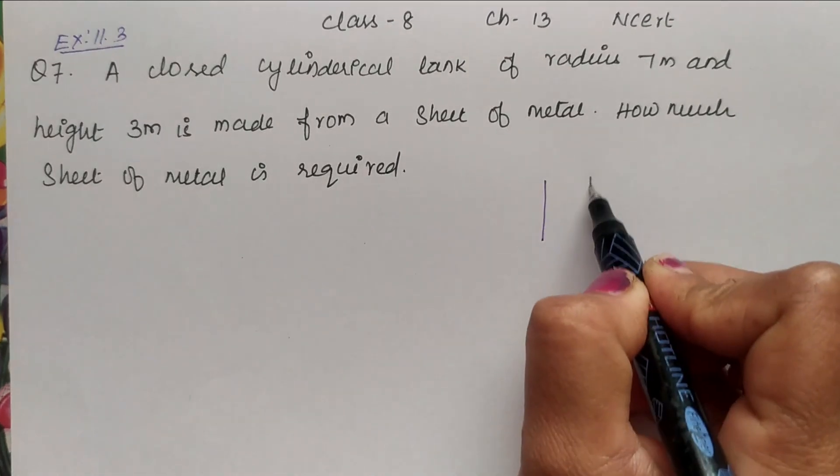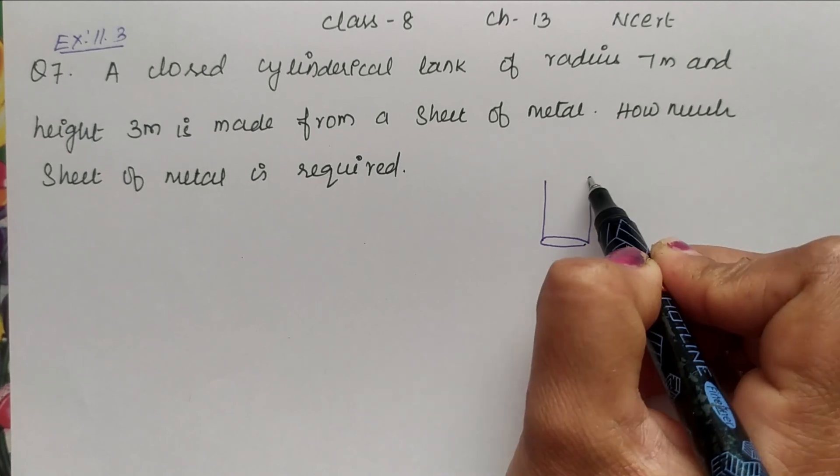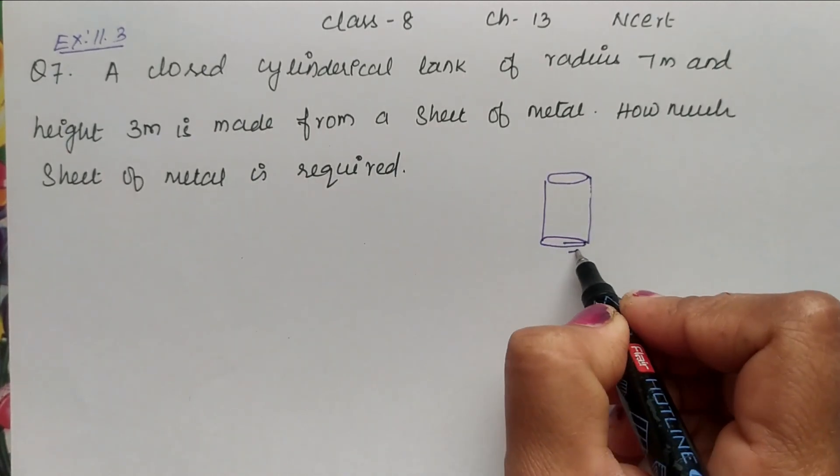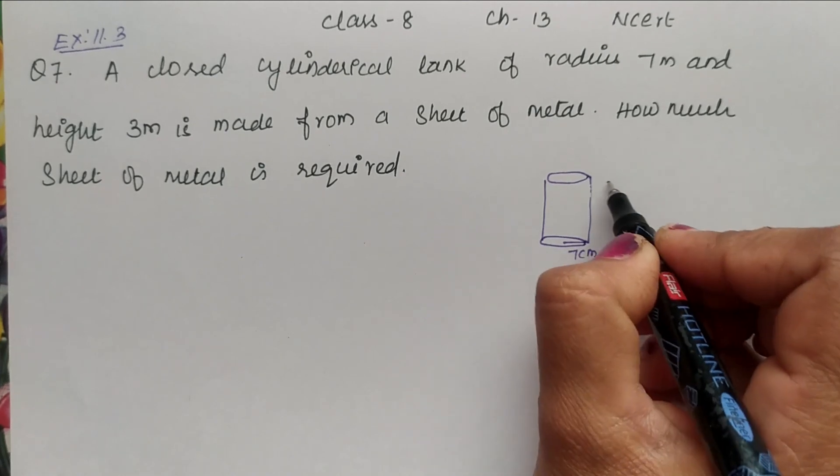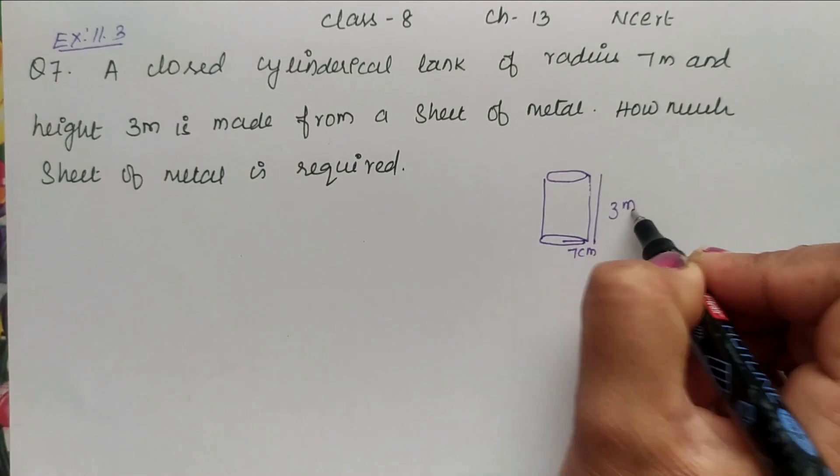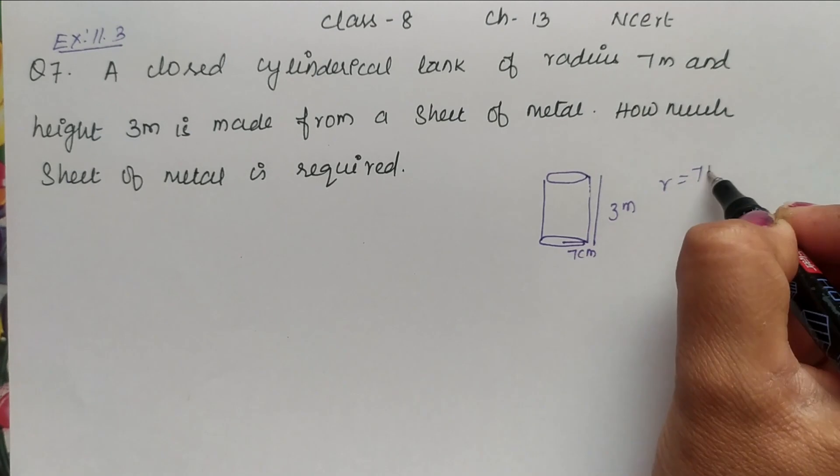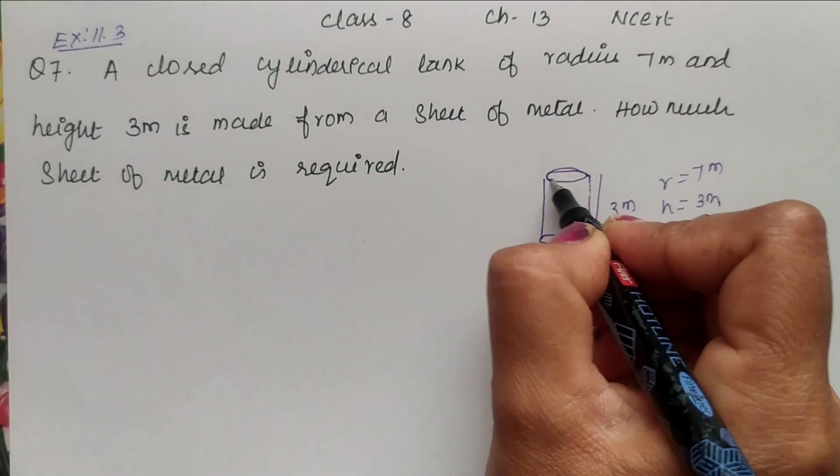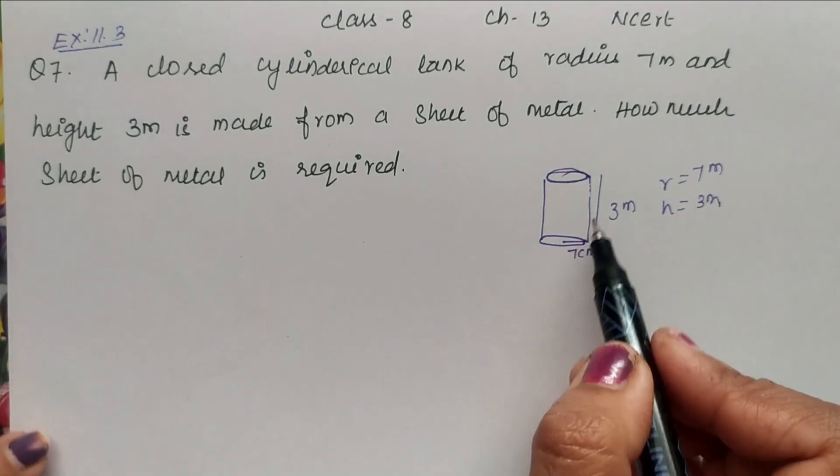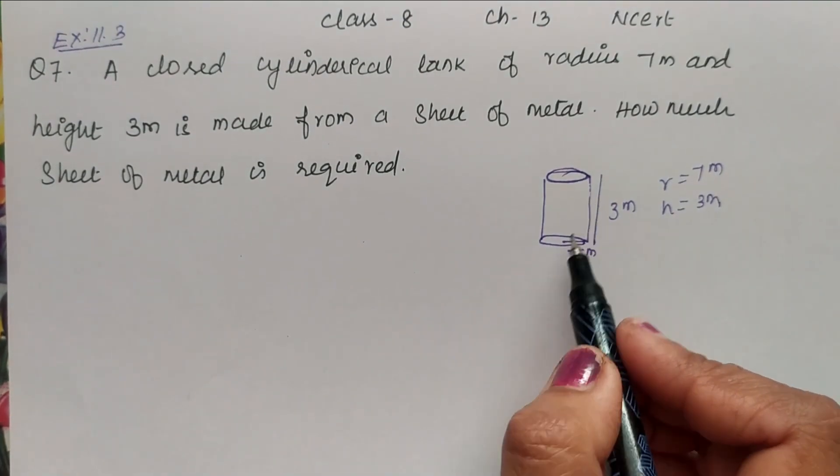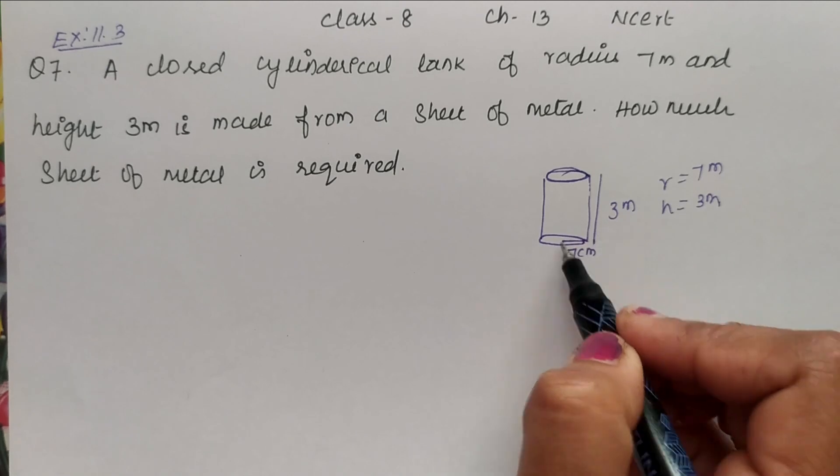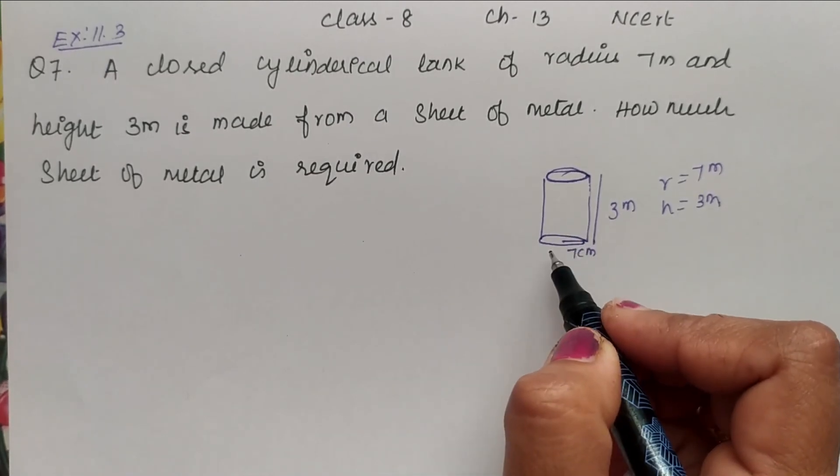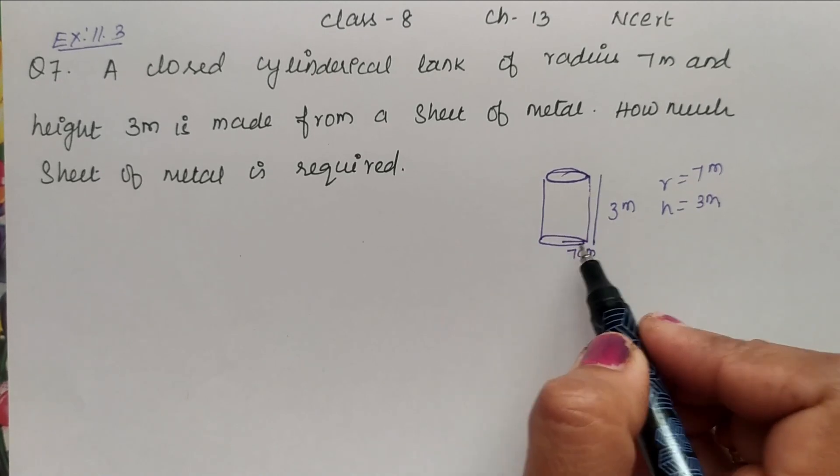So yes, cylindrical tank. It is a closed tank and its radius is 7 meter and height is 3 meter. So R is 7 meter, height is 3 meter. It is a closed tank. So we need to find how much sheet of metal is required to make this tank.